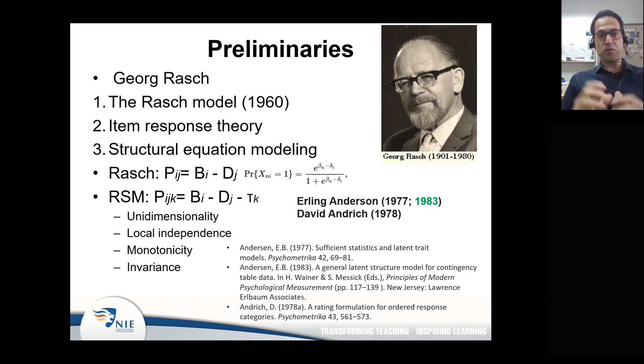Now let's zoom in on the Rasch model itself. The basic model is represented by the first notation as you see here. It predicts that the probability of a person with an ability of B_i to answer an item with a difficulty level of D_j is governed by these two parameters. If you have these two parameters, you can predict the probability by which this person can answer that item correctly or incorrectly.